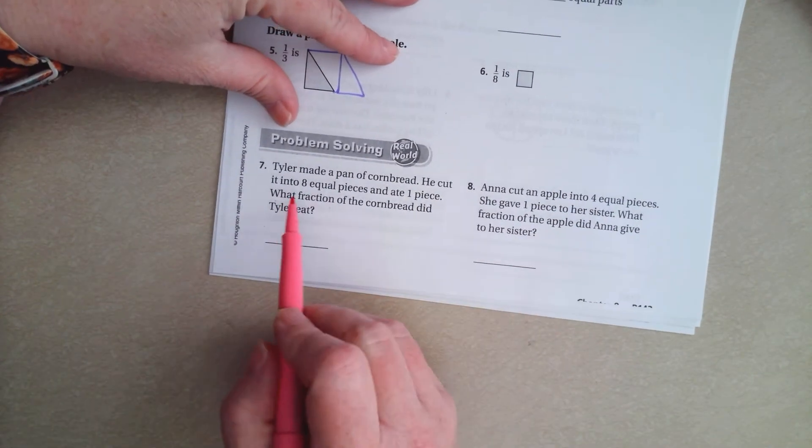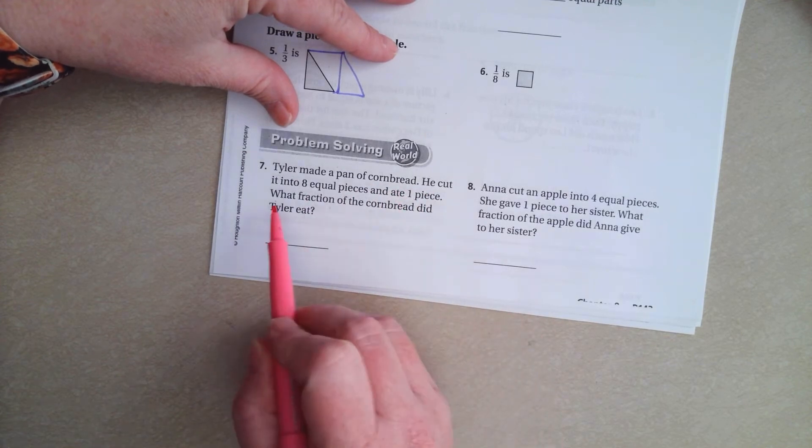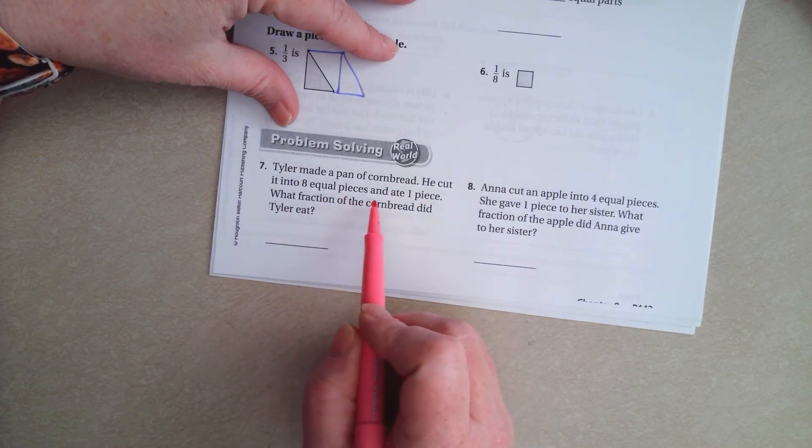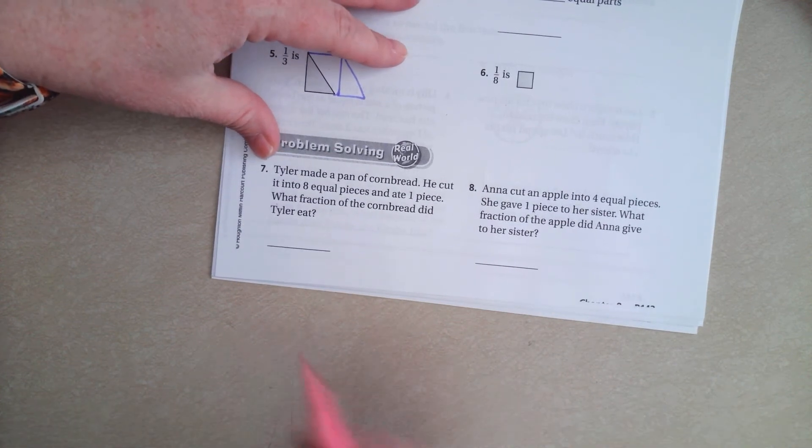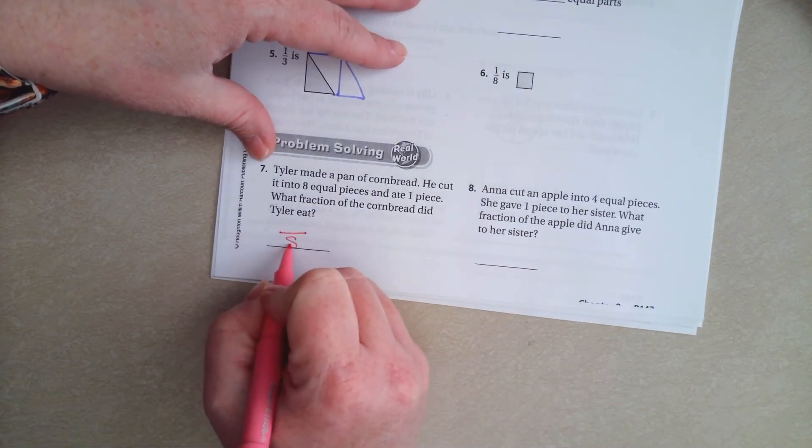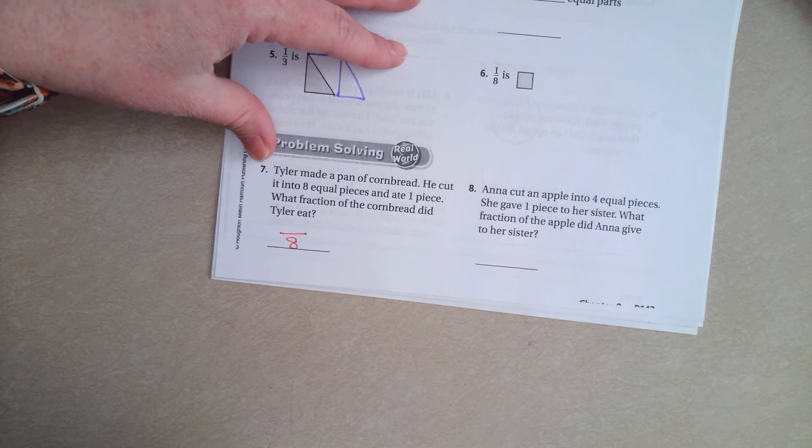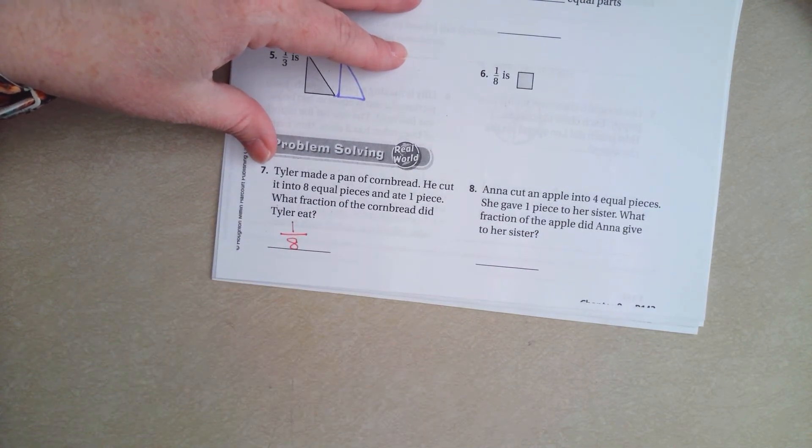Number seven says, Tyler made a pan of cornbread. He cut it into eight equal pieces and ate one piece. What fraction of the cornbread did Tyler eat? Well, there were eight pieces, so that's our denominator, and he ate one. That's it, guys.